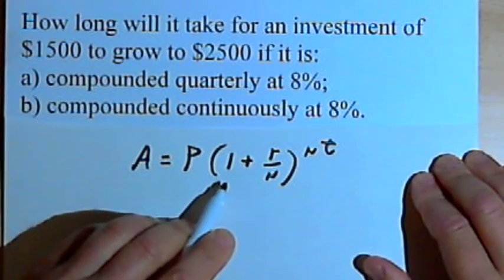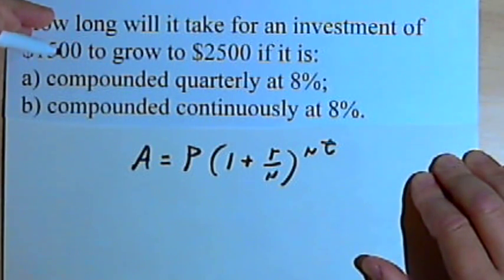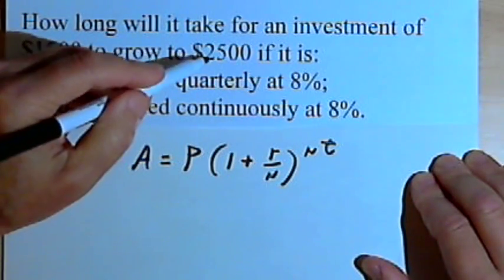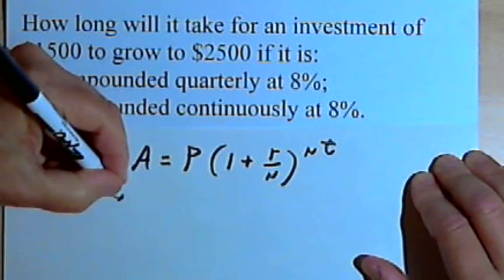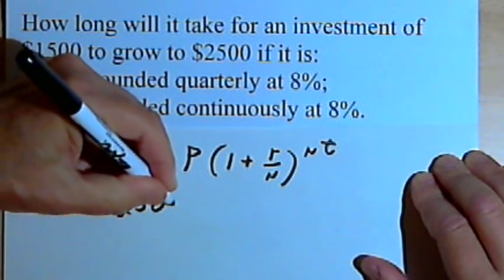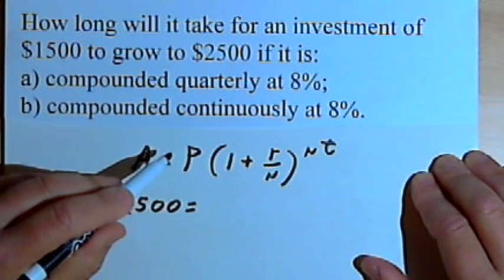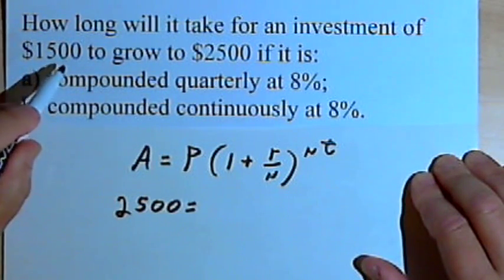So let's take that formula and fill in whatever numbers we can from the problem. A is the amount of money we're going to end up with. We want to end up with $2,500. So we'll have $2,500 equals P. P is the principal, the amount you invest. So that's $1,500.